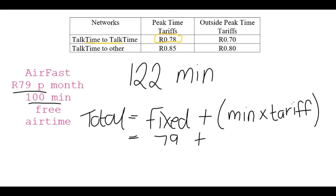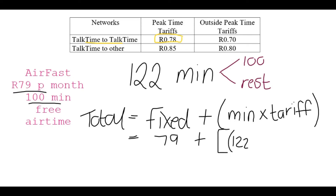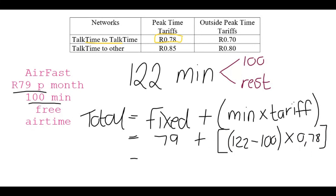Now, of the 122 minutes, the first 100 were free, so I only pay for the rest. The calculation is: 79 rand plus the bracket (122 minus 100) times 78 cents, then close the bracket. When you type this into your calculator, make sure there are two opening brackets to start with, then close the bracket, multiply, and close the bracket again at the end — otherwise you won't get the right answer.